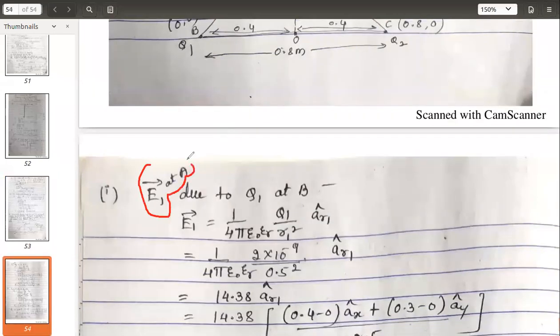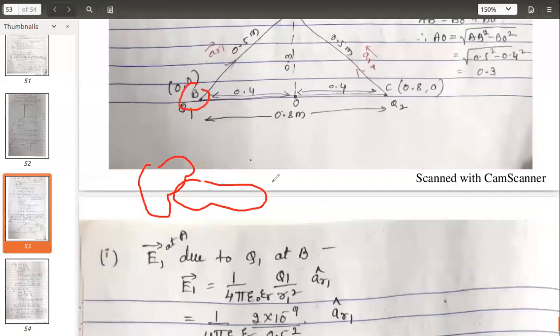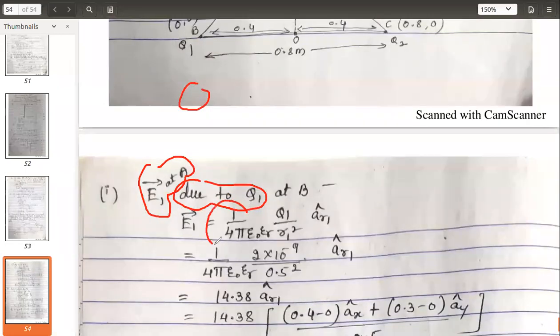The field intensity at point A due to the charge q1, where the charge q1 is at point B, is given by the formula: 1 by 4πε₀ into εᵣ. Be careful while taking this because the medium given is not air this time, it is bakelite and εᵣ given is 5.